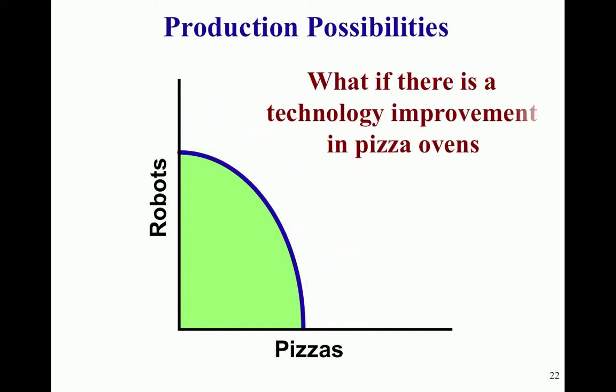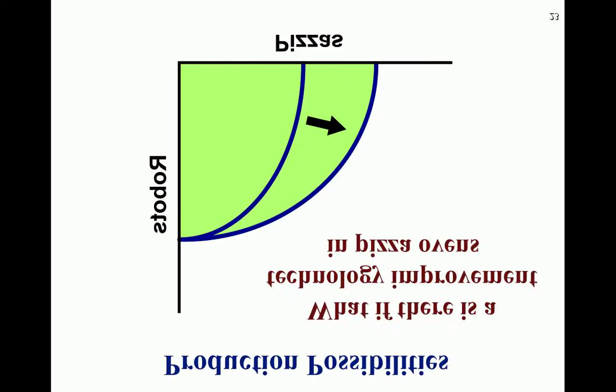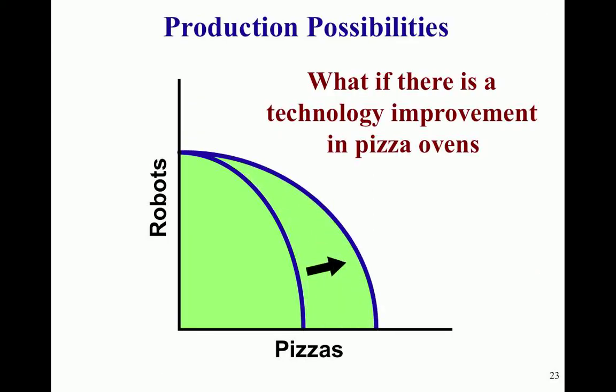How might you adjust this PPC if there is a technology improvement in pizza ovens? Will that impact the amount of pizzas we can make? Will that impact the amount of robots we can make? What you should have come up with is a shift out just for pizzas — it doesn't change the amount of robots we can make, but it does shift out the amount of pizzas we can make.